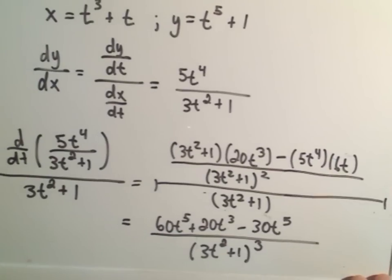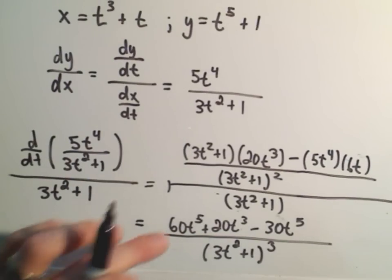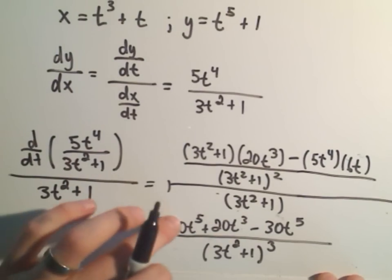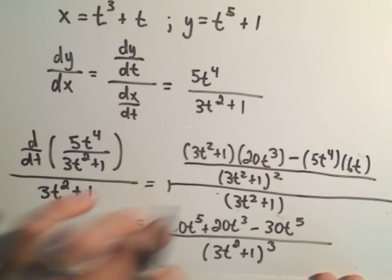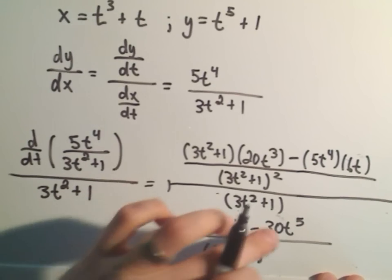And obviously, we could simplify that down a little bit further. Make the 60t to the fifth minus 30t to the fifth. We can combine that into just 30t to the fifth.